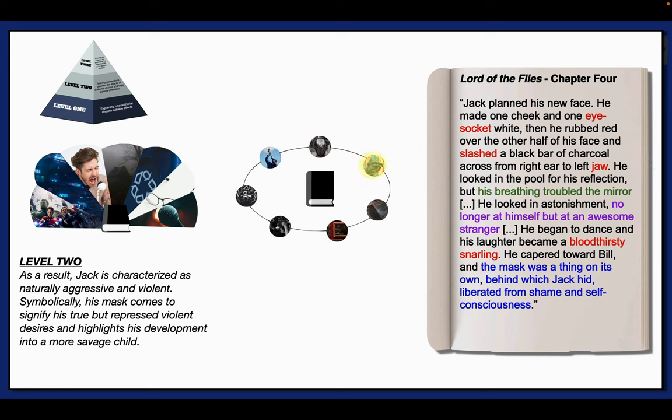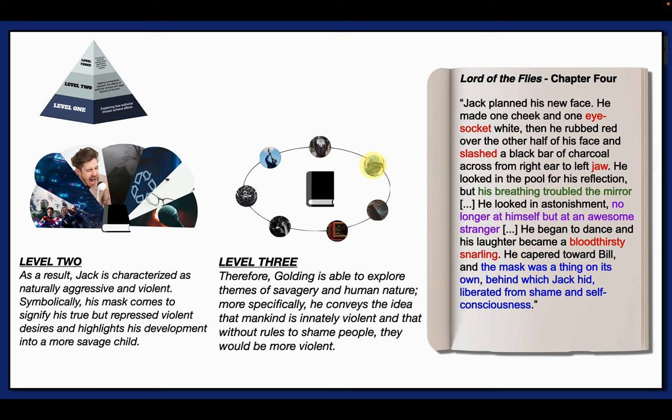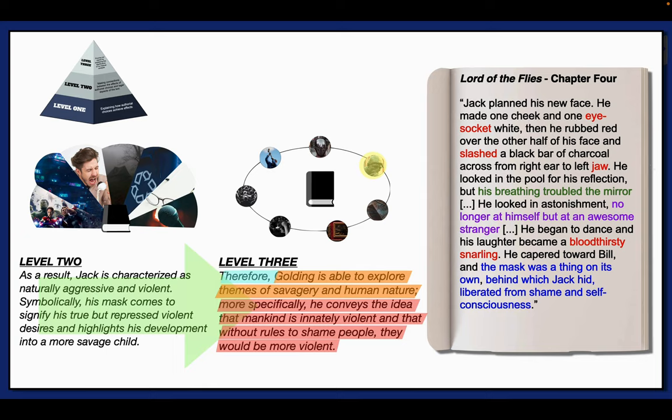At level 3 then, I might talk about the development of a big idea. I'll consider the theme of human nature and I might say specifically that Golding explores the theme of human nature, conveying the idea that mankind is innately violent and that without rules to shame people, people become much more violent and act on their true human nature. So as you can see, there are some specific things happening here as well, just like level 2. It begins with a cause and effect of transition in order to demonstrate the relationship between my earlier analysis and this final conclusion. We can also see that we've made this connection to the development of an idea, something specific and something significant and then we've expanded on that to concretely and explicitly say the message that's gone across. And most importantly, as always, there is a logical connection between level 2 and level 3.